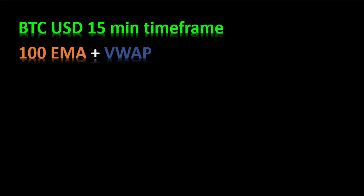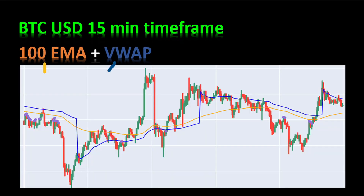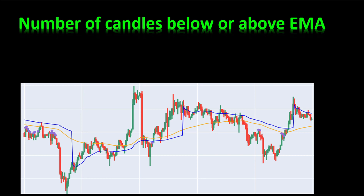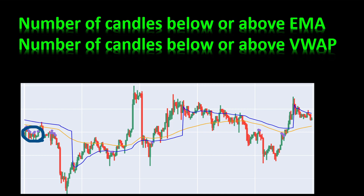We will use a 15-minute time frame for the Bitcoin/US dollar trading price, including two indicators: the 100 EMA and the VWAP. When we have a certain number of candles trading below or above the 100 EMA we can conclude that we have a downtrend or an uptrend respectively. In an uptrend we're only looking for buying positions, and in a downtrend we're only looking for selling positions. This trend behavior is also confirmed if the candles are trading below or above the VWAP curve. The entry point is triggered when the price is close enough — within a certain fixed distance — to the VWAP curve.